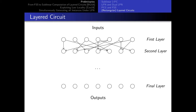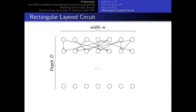A circuit is layered if you can partition the gates into layers such that wires don't cross — each wire only goes from one layer to the next. There is a generic transformation from circuits to layered circuits, but it incurs a quadratic blowup in size. That's why sublinear protocols don't carry over from layered circuits to general circuits. In this presentation, we'll consider the simplified case of rectangular layered circuits, where every layer has the same size — called the width — so width times depth equals the circuit size.